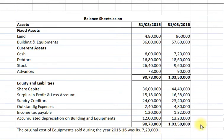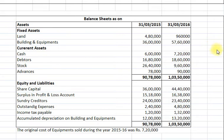From this balance sheet and income statement we are to prepare a cash flow statement. Looking at the information in the income statement, we will prepare the cash flow statement and find cash flow from operating activities under the direct method. For that we need some calculations, so first of all we will do some workings.